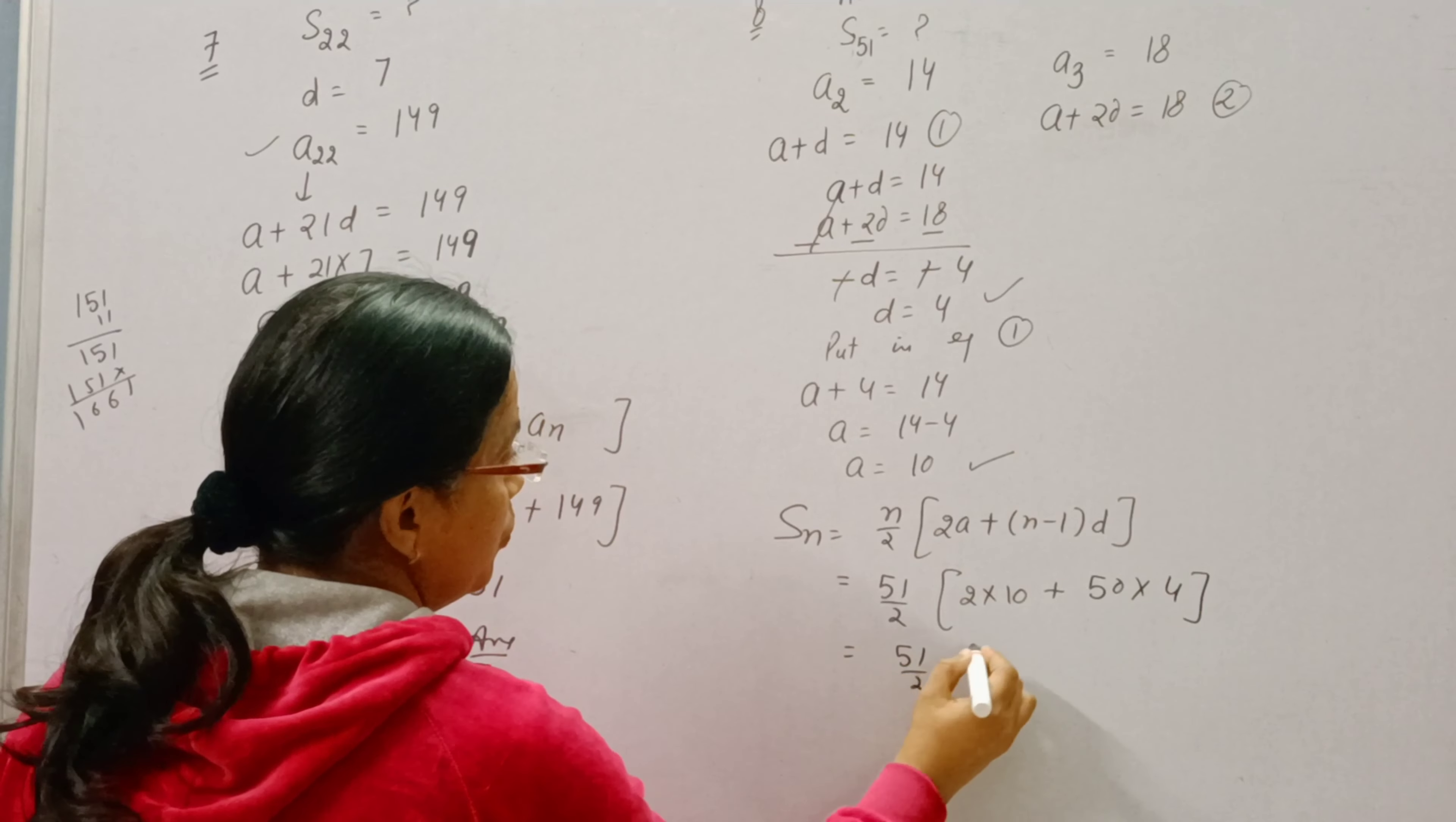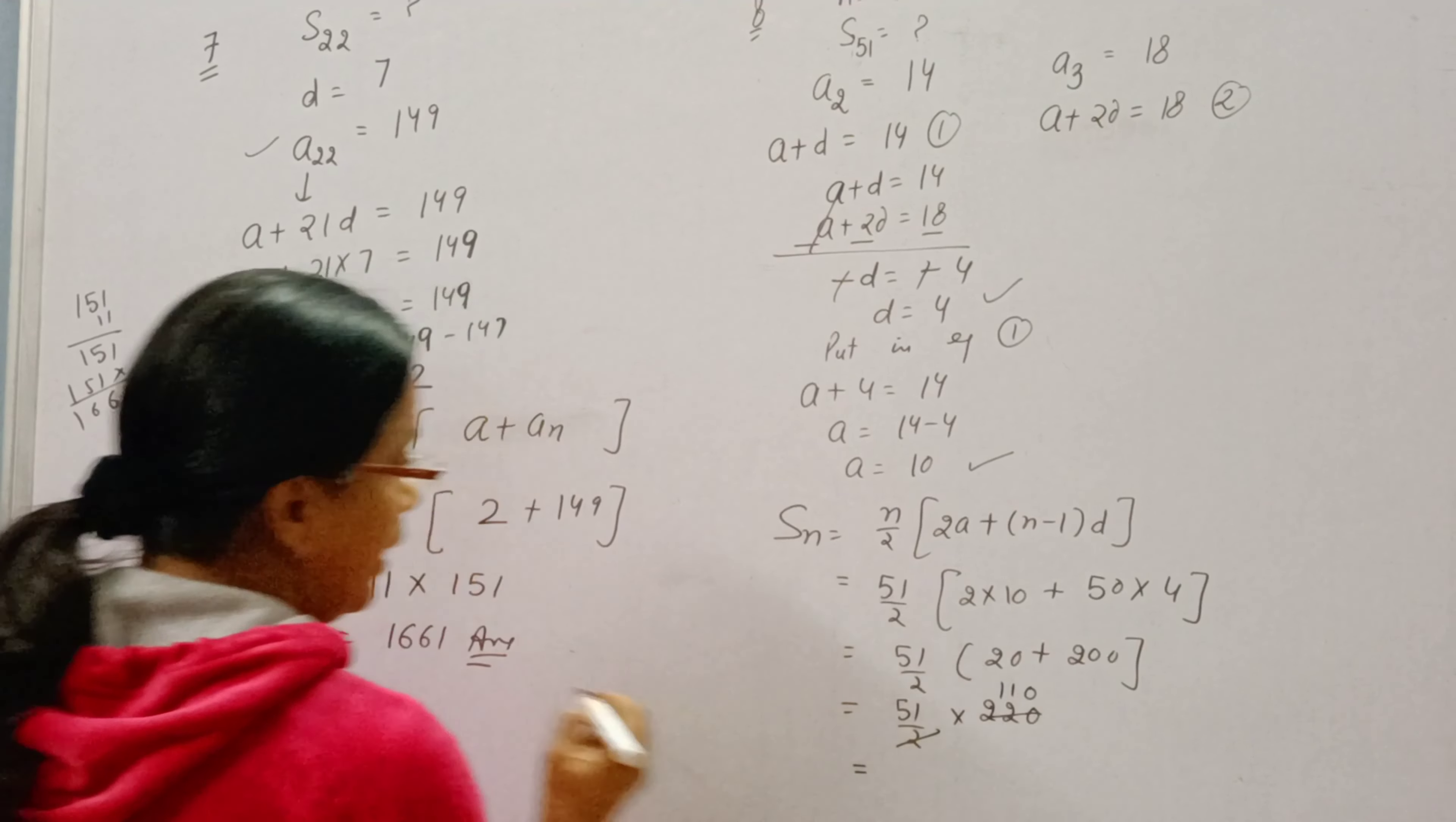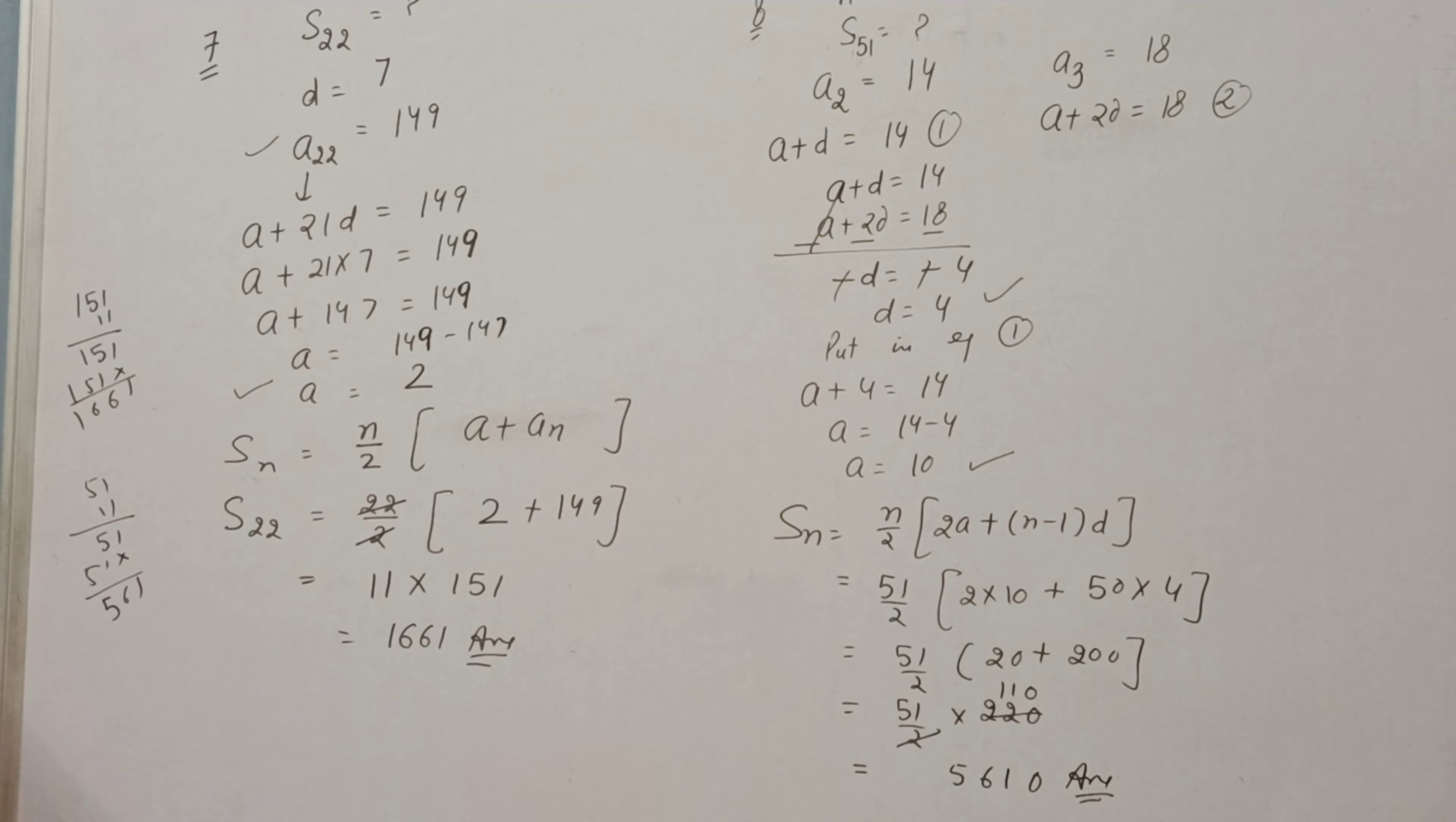51 by 2. It will become 220. 2 times 11 is 51 into 11. So we will multiply it. 5610 is the answer. These are the questions. I hope you all have understood. Thank you for watching. Have a nice day.